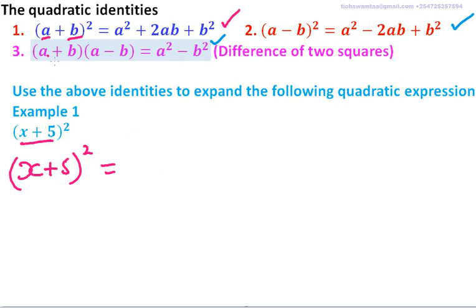So we have, since our x takes the place of a, we have x². Then plus, we have 2, this is a, which is the same as x, so it is 2x multiplied by 5, which takes the place of b. So we can use dot to mean multiplication.